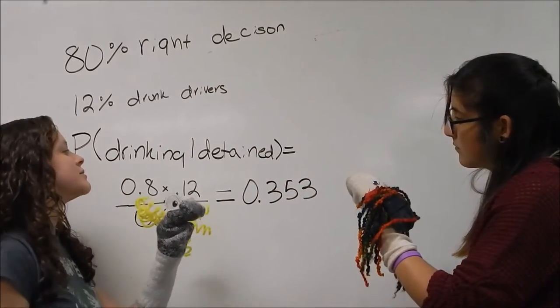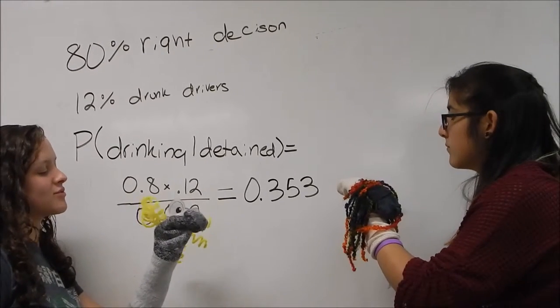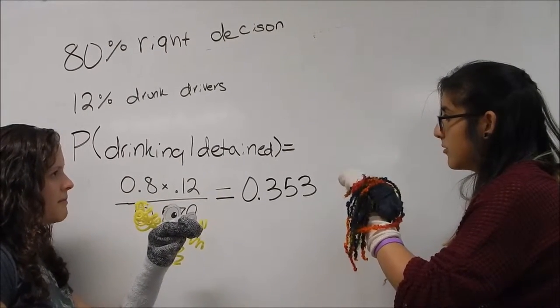So the probability that you were drinking, given that you were detained, will be 35.3%. Okay.